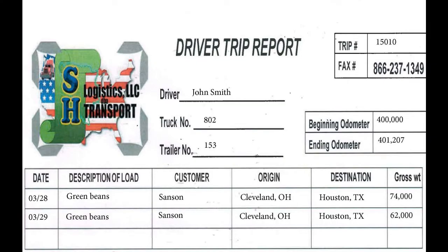The first section of the envelope is rather self-explanatory. You will first start by putting the trip that you are on. The trip number will have to be obtained from management, which is our load number. You can ask or call our dispatcher for that information, or the accounting department can provide you with that information. For this demonstration I will use load number 15010.